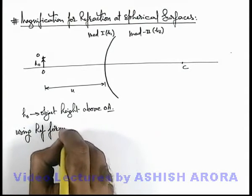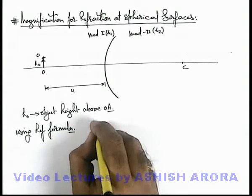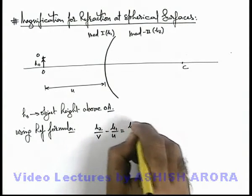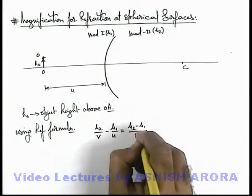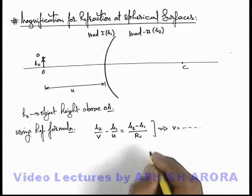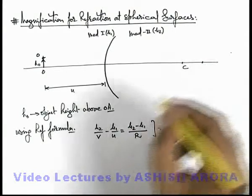Using refraction formula in this situation we can write μ2/v minus μ1/u equals (μ2 - μ1)/r, and solving this we'll get the value of v. Say this is the point where image is obtained.